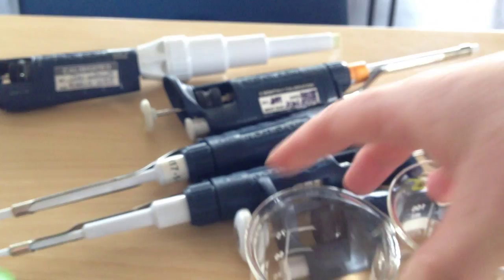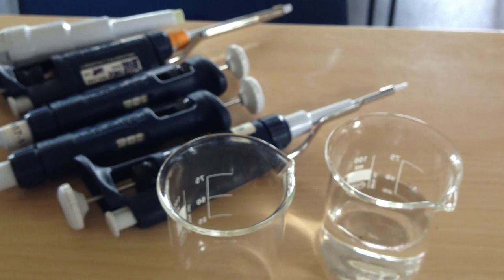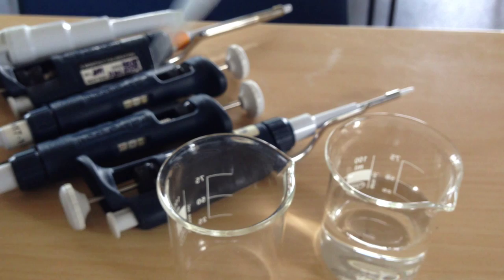So now I'm going to show you how we actually use Gilsons. Here I have some beakers of water. So I've got my P1000. I'm just going to pop a tip on the end there.